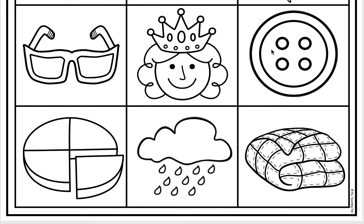Listen as I make the first sound in button. That's right — this word does not make the coo sound, so let's move on. Listen as I make the first sound in fourth — this is one fourth of the circle. That's right — this word does not make the coo sound. Let's move on. Listen as I make the first sound in rain. That's right — this word does not make the coo sound. Let's move on.